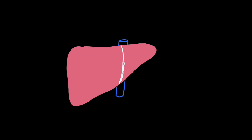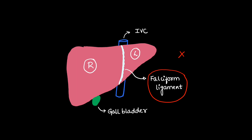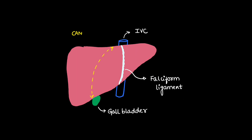There is the IVC behind the liver, and along the line of the IVC there is the attachment of the falciform ligament. Here is the gallbladder. The left side of this falciform ligament was the left lobe, and the right side was the right lobe. Now this classification is obsolete and we use Couinaud classification.